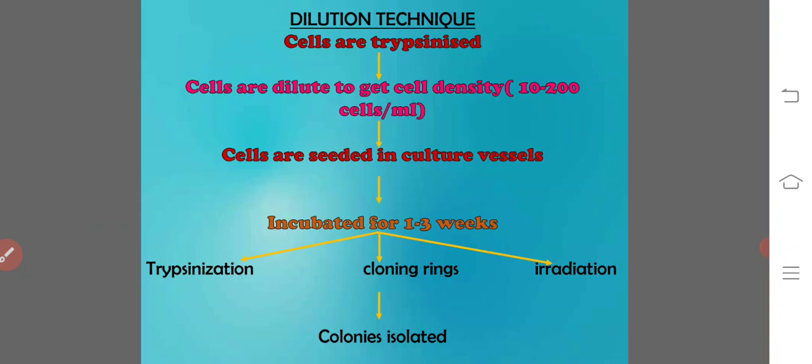Dilution cloning is the most commonly used technique for cloning of monolayer cells. Cells are trypsinized to produce single cell suspension, then diluted for 3–4 steps to get a suitable cell density. These cells are then seeded in culture vessels like multi-well dishes, petri dishes, or plastic bottles. The cultured vessels are incubated under appropriate conditions for 1 to 3 weeks.